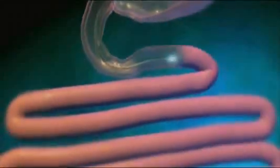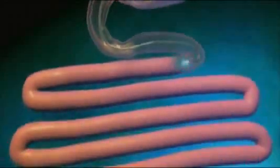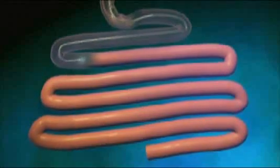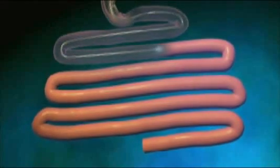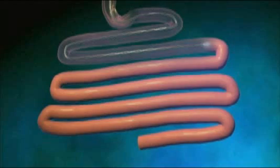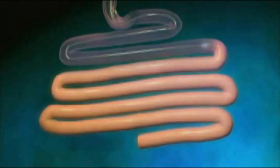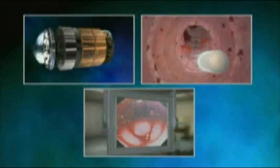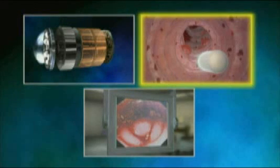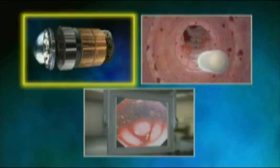However, these endoscopes may only reach the first 3 to 6 feet of the bowel. Oftentimes, the abnormality is located in the remaining small bowel. But with video capsule endoscopy, doctors can examine hard-to-reach tumors or view distant intestinal bleeding through dynamic video taken of the bowel.